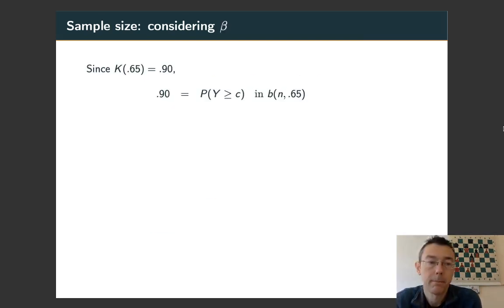Now let's think about beta. We're told that when p is 0.65, the power level is going to be 0.90. So that's the probability of rejecting the null hypothesis when the true probability of success is 0.65. The probability of getting a Y value in that critical region when the probability p is 0.65 should be 0.90.